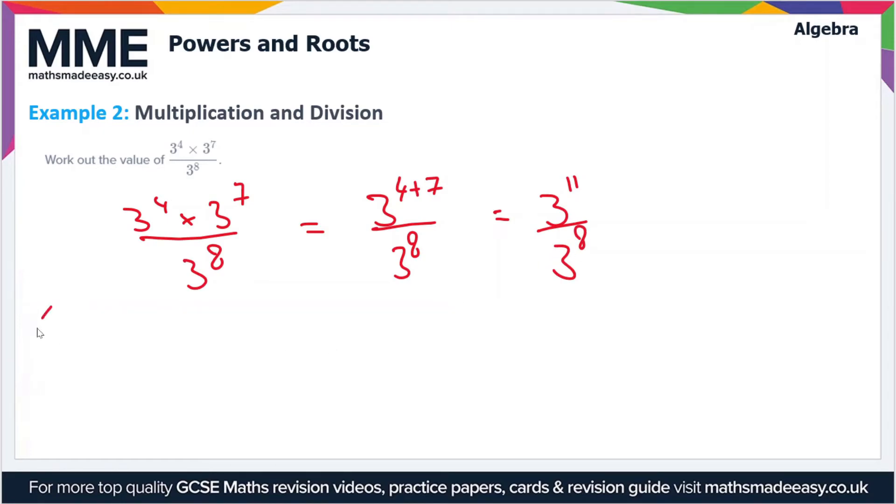Let's bring this working down to here. So 3¹¹ over 3⁸ is 3¹¹ divided by 3⁸. Now we can use the division law here. With the division law, we subtract the power from the other one, so we end up with 3¹¹⁻⁸. This is in the first video if you want to check that out. However, this simplifies to 3³, which is equal to 27. So the value of this expression is just 27.